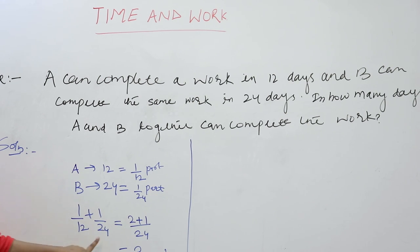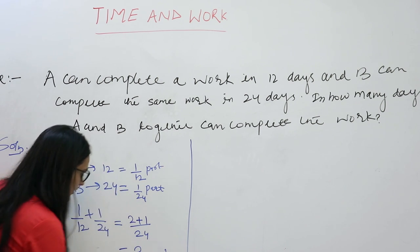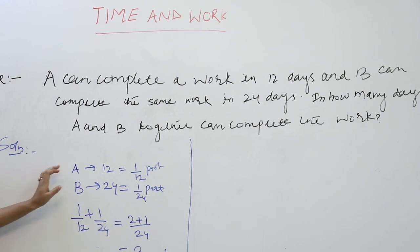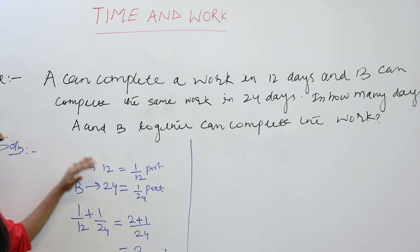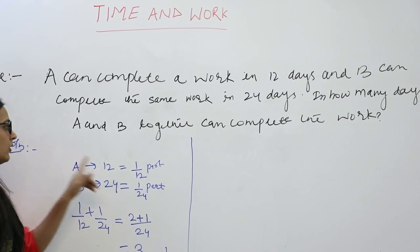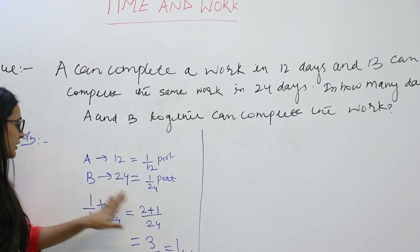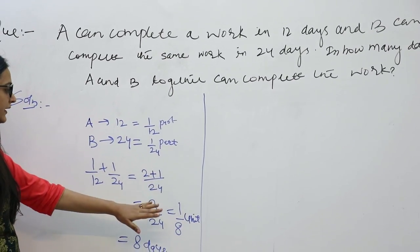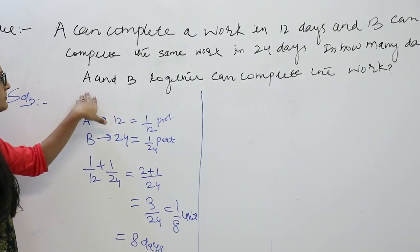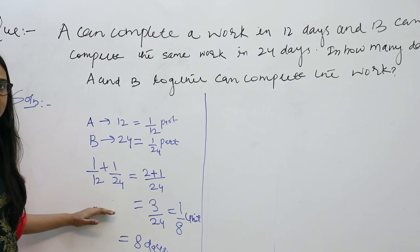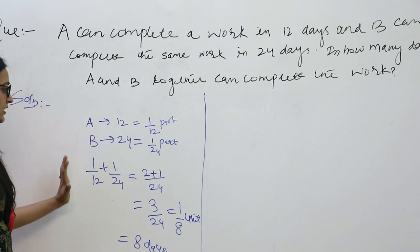This is the one day work of A and B together. Now, in the question, it is asked that in how many days can A and B together complete the work. When we reverse this one day work, we get the number of days in which A and B completed the work. So from this point, it is clear that efficiency is inversely proportional to time when the work is constant. And this is the fraction method.